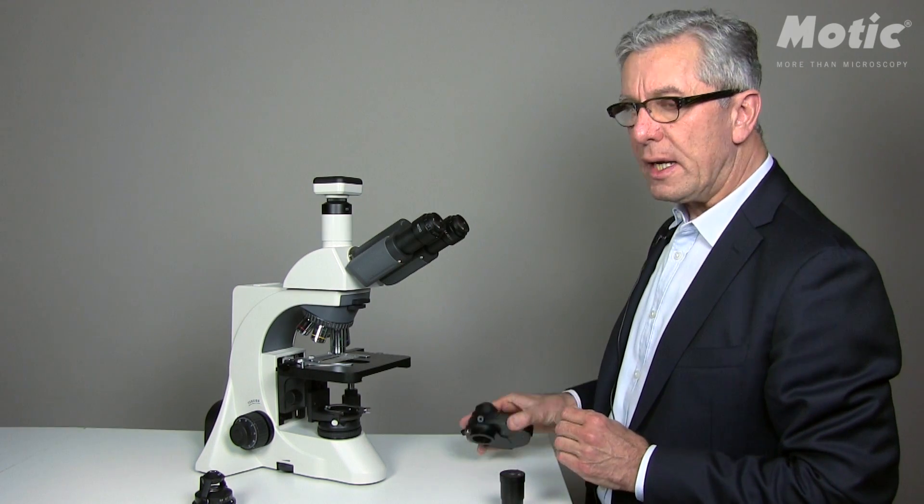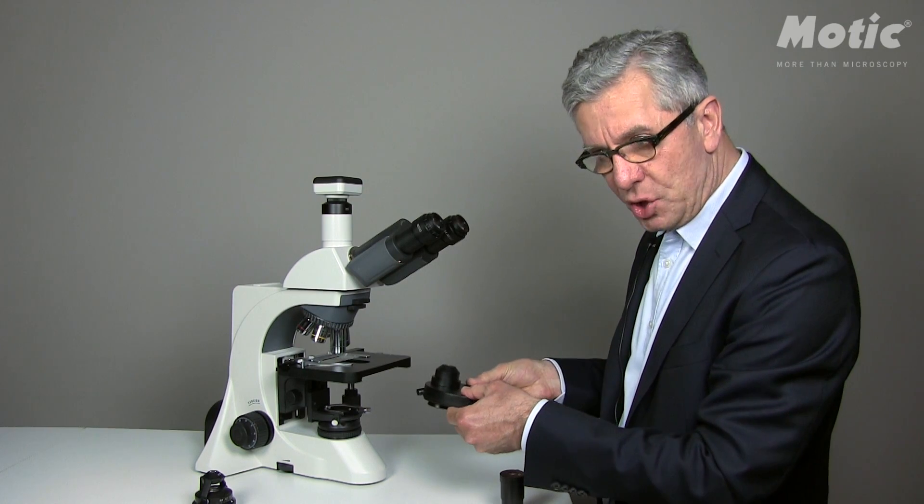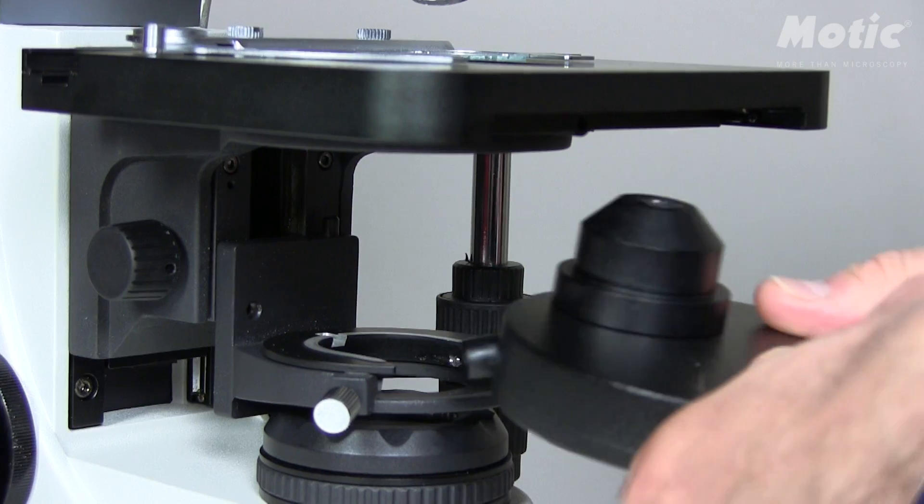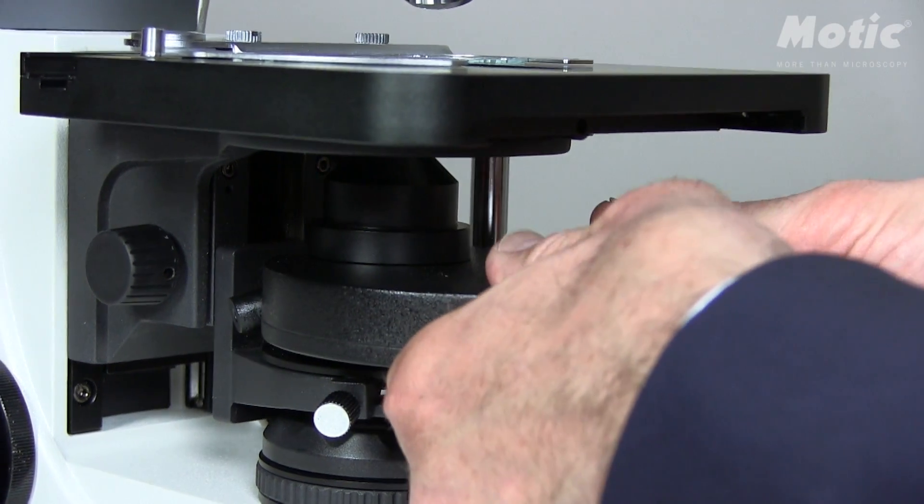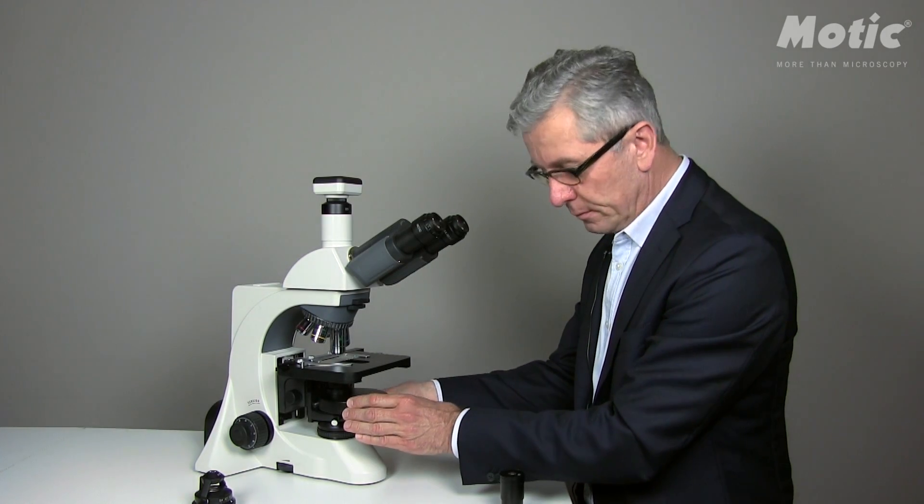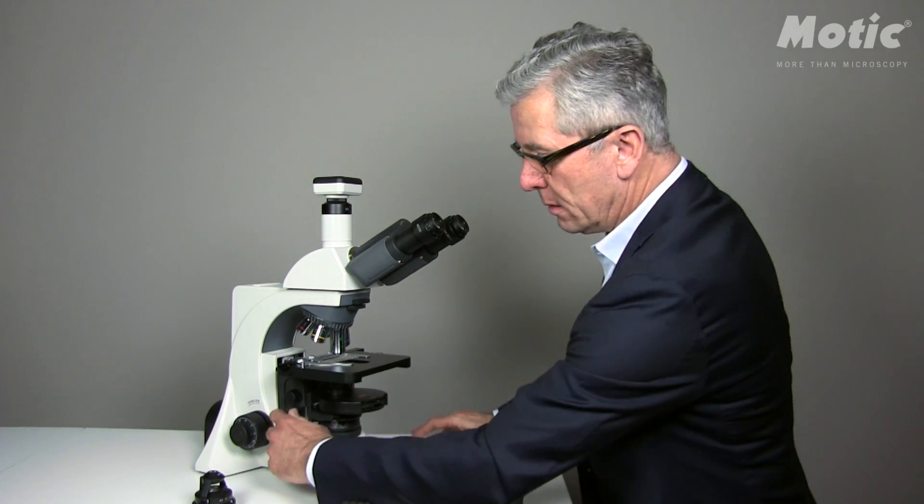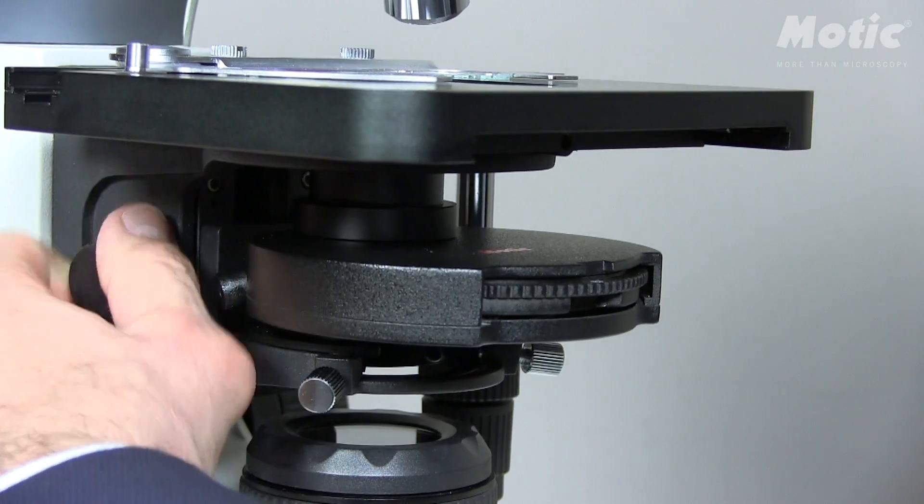The turret condenser has got an orientation pin, so it will be very easy to find the right position within the condenser carrier. Once you've found it, fix it. And again, drive the condenser carrier upwards.